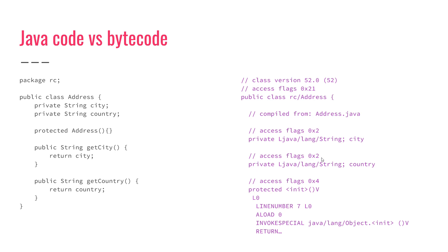It's semi-human-readable — you probably won't want to write code in bytecode, but I just wanted to show you the transformation from Java code to bytecode. If you want to play with this, in IntelliJ you can go to a Java file, click View, then View as Bytecode, and you'll get the corresponding bytecode for your class.